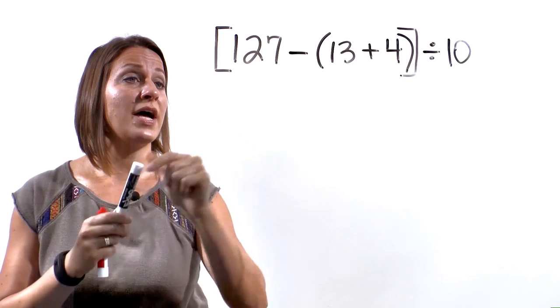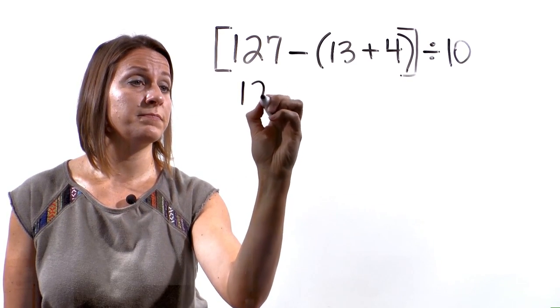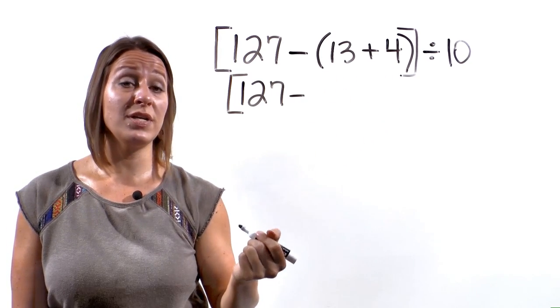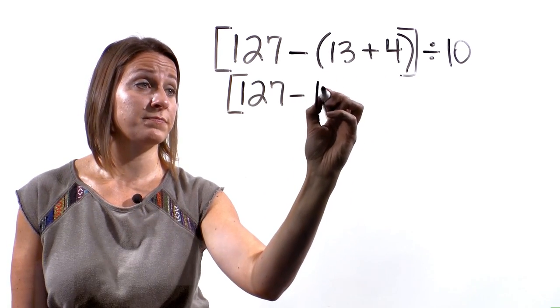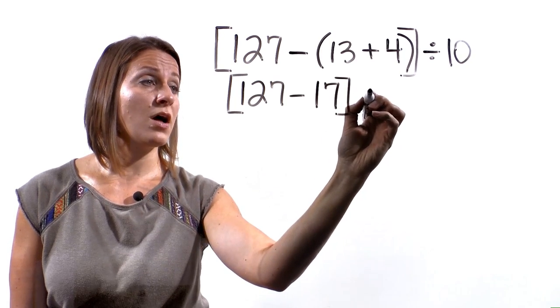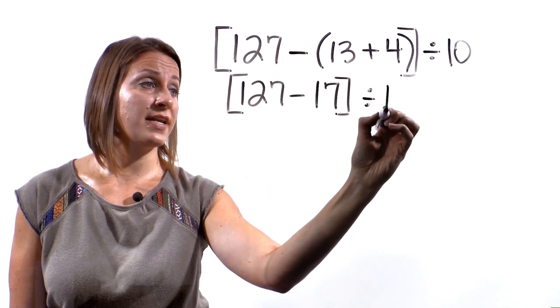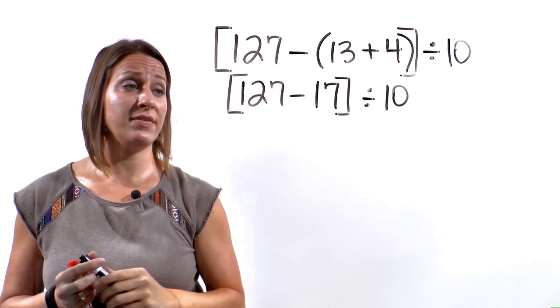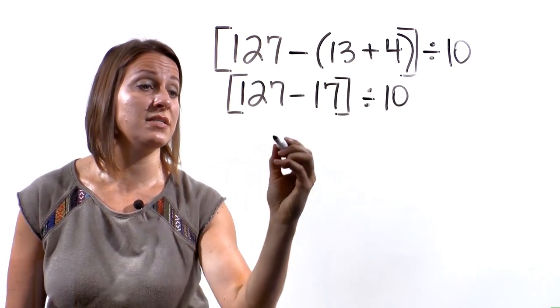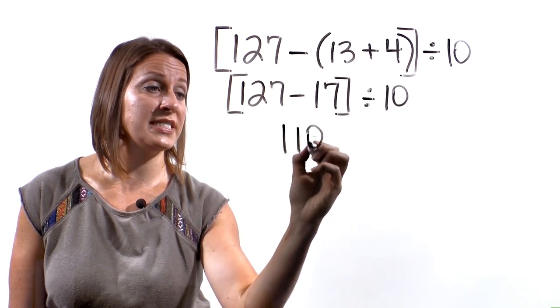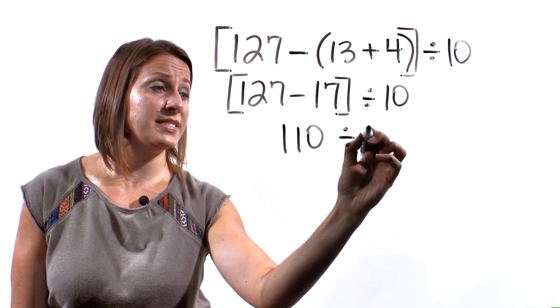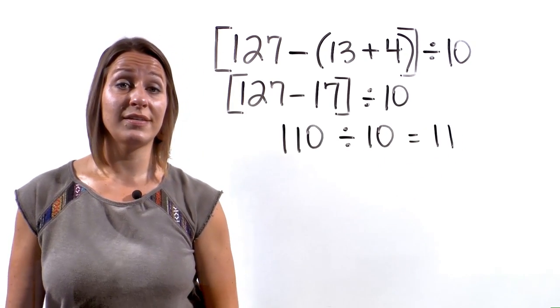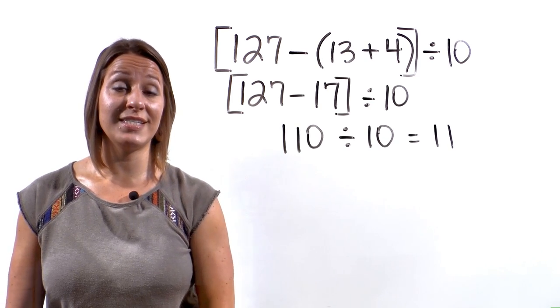So first, we'll have 127 minus 13 plus 4 is 17. All of that divided by 10. Now we'll work through the brackets. 127 minus 17 is 110 divided by 10 equals 11. So for this problem, the final answer is 11.